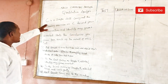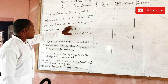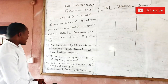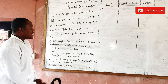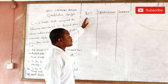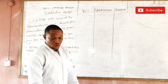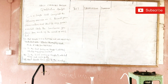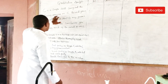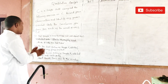The question says: 'C is a simple salt. Carry out the following exercises on C, record your observation, identify any gases evolved, and state the conclusion you draw from each result.' Before you start doing the tests, you have the table already. You are going to record: what is the test, what have you observed, and what can you infer from your observation.